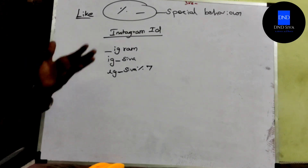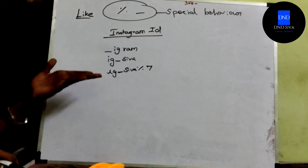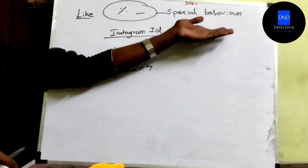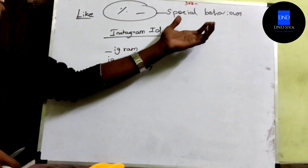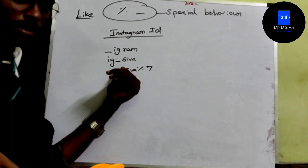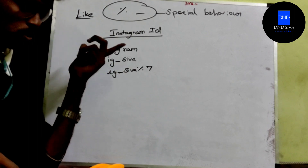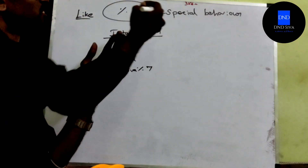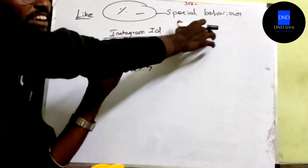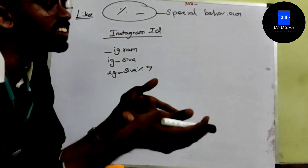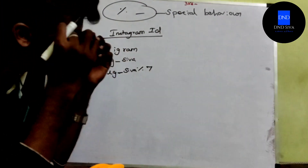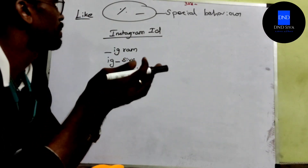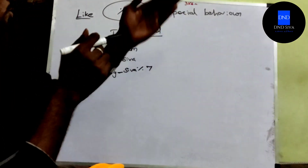So they can represent any information. That's special behavior. Now we are going to see how to remove special behaviors. What we can use is the escape character, so we can remove special behaviors.